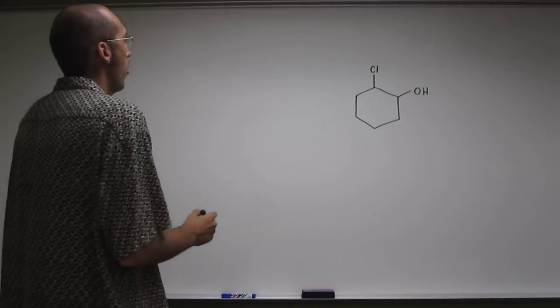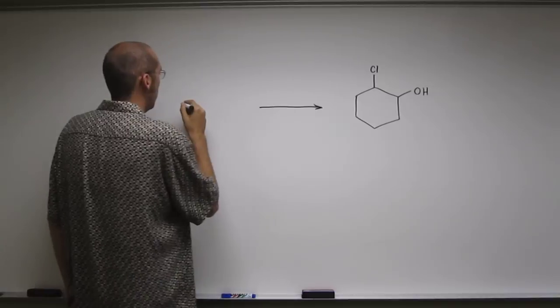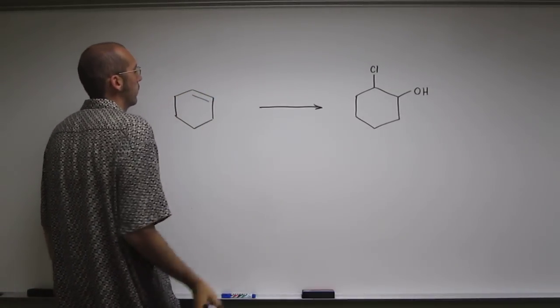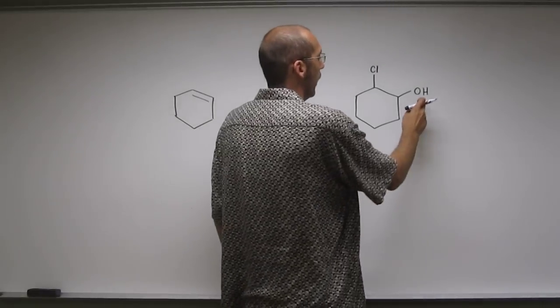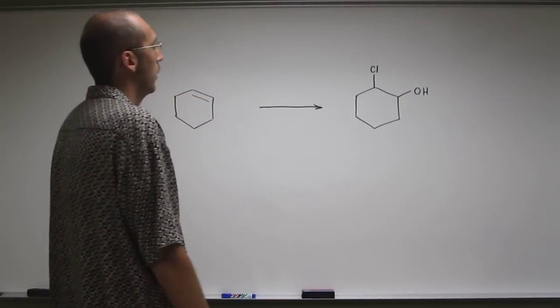Cyclohexene is the only alkene that would be able to be used to synthesize this, of course. So you're going to have to add the hydroxyl substituent and the chlorine on there.